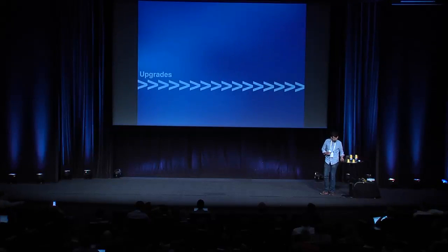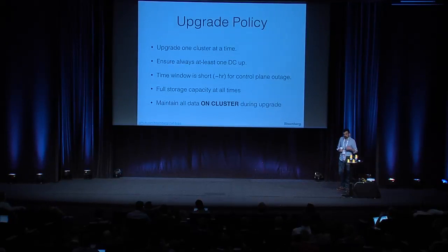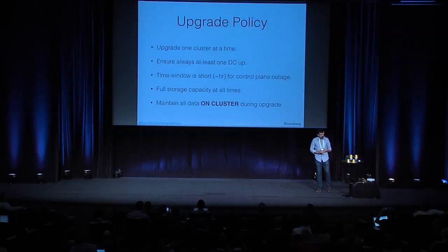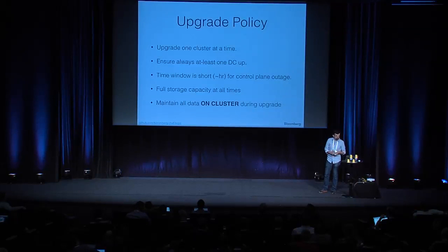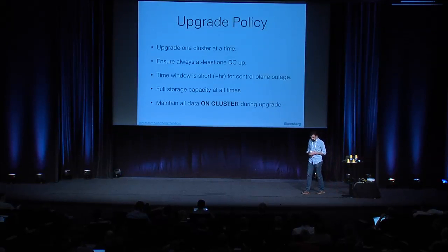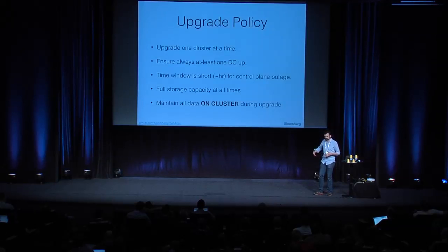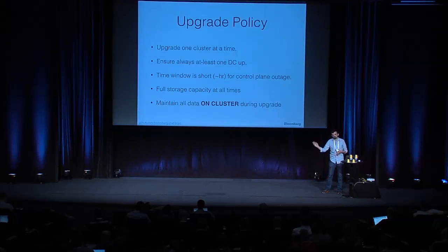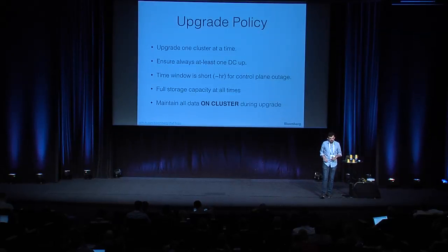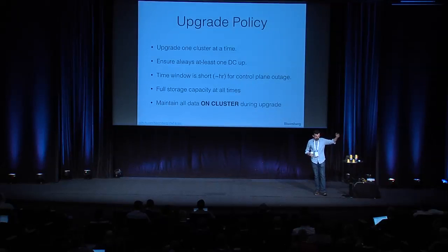How do we go about upgrading? Our policy is we'll only ever upgrade one network segment in one data center at a time, ensuring that segment is available in at least another data center. Our target downtime is roughly one hour to get the control plane back up. We have a lot of data on our Ceph clusters — we can't just blow everything away and start again. We replicate within a cluster three times; we do not replicate across to another data center.